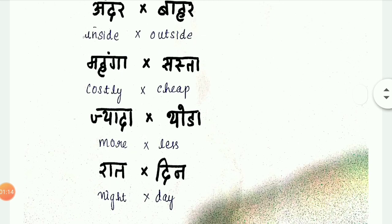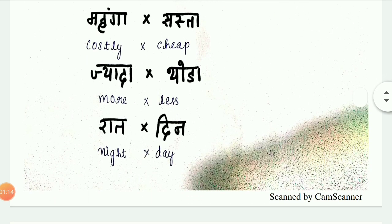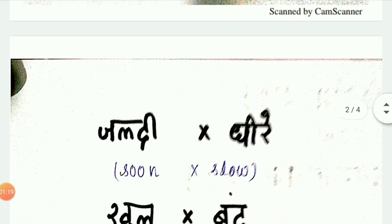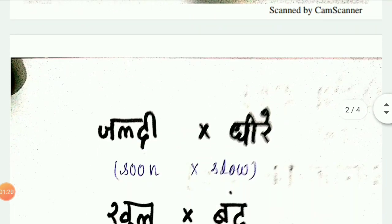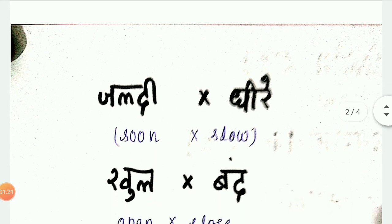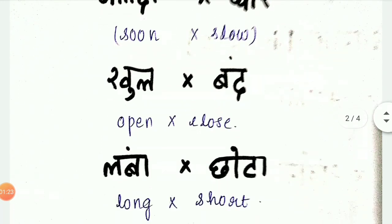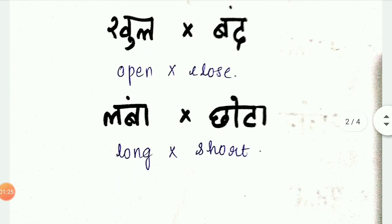Raat / Din — Night / Day. Jaldi / Dhire — Soon / Slow. Khul / Band — Open / Close. Lamba / Chota — Lamba means Long, Chota means Short. Hope you all like it.